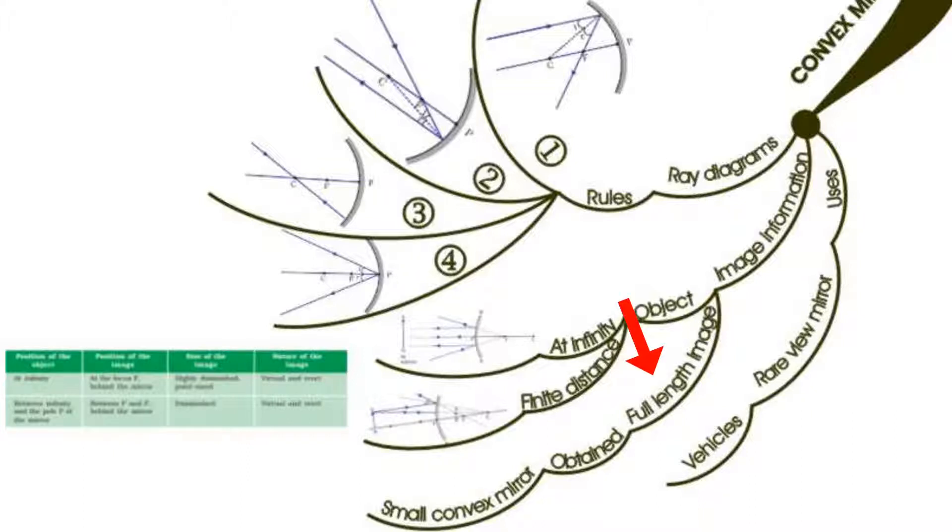A full-length image of a large object can be obtained using a small convex mirror. Uses of convex mirrors: convex mirrors can be used as rearview mirrors in vehicles.